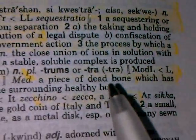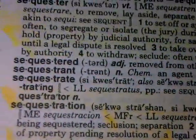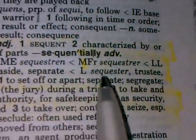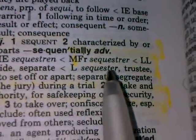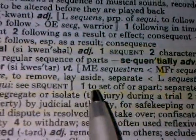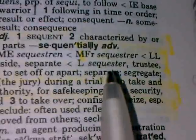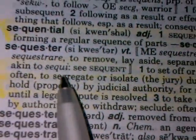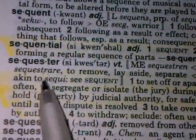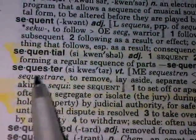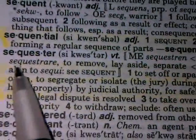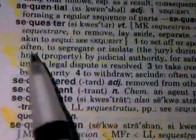In medicine, a sequestrum is a piece of dead bone which has become separated from the surrounding healthy bone. Now let's go to the root up here — sequester. Middle English sequestren, from Middle French, Late Latin sequestrare, which means to remove, to lay aside, to separate. Latin sequester, which is a trustee, akin to sequi and sequent — like sequence, sequential. Those are different roots. You have to really learn how to study the roots.